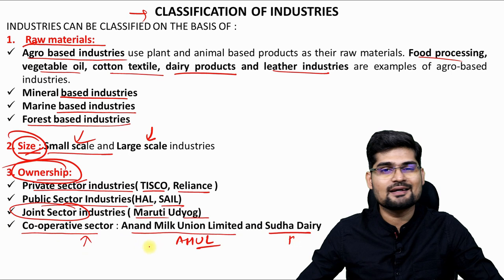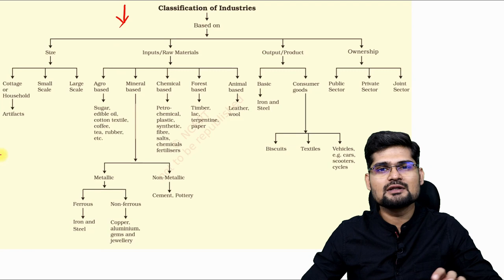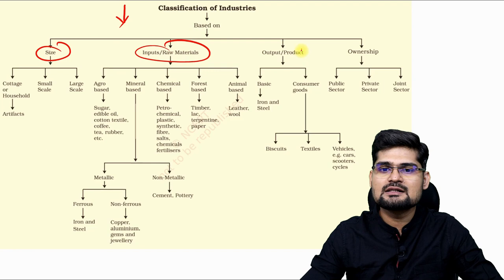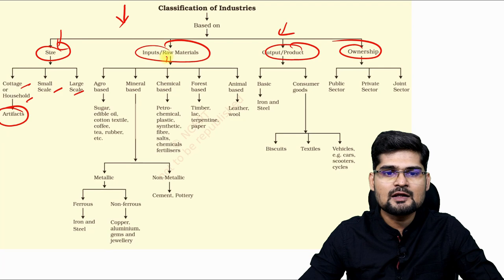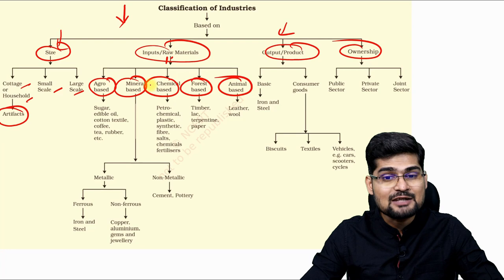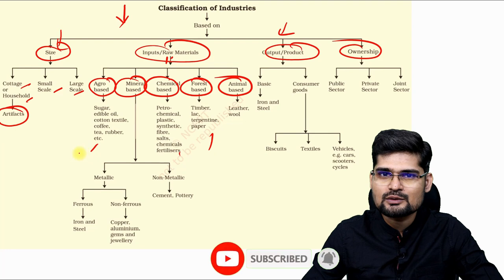Looking at the classification of industries through a flow diagram — you can make this flow diagram and learn from it. It is based on size, raw materials, output and ownership. Under size: cottage or household, small-scale, large-scale and artisans. Under input based on raw material: agro-based, mineral-based, chemical-based, forest-based and animal-based — five types. Examples include sugar, edible oil, cotton textile, coffee, tea and rubber for agro-based.